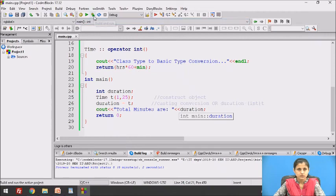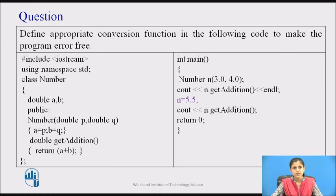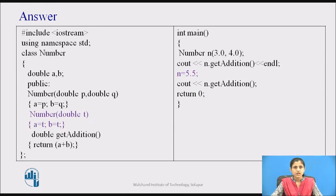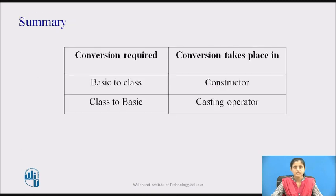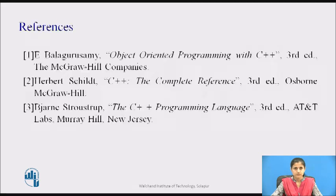Let's see the output. Now, pause the video and define the appropriate conversion function in the given code to make the program error-free, assigning 5.5 to both data members A and B of object N. The answer is: a constructor with a double-type parameter is added to the program. N is an object of the number class. The statement N = 5.5 converts basic type to class type, calling the constructor with the double-type parameter. The value 5.5 is assigned to both data members A and B inside the constructor. This table provides a summary of type conversions.